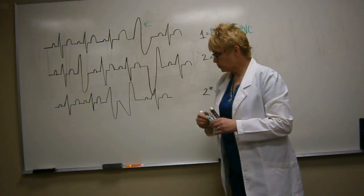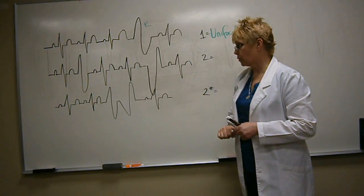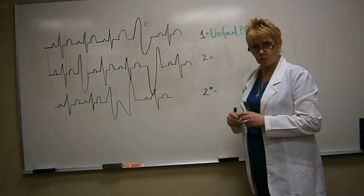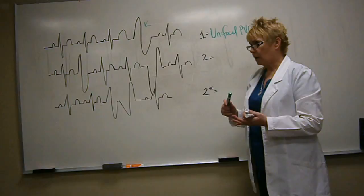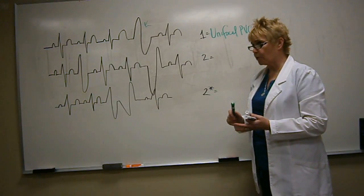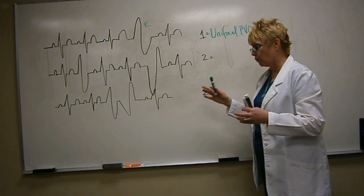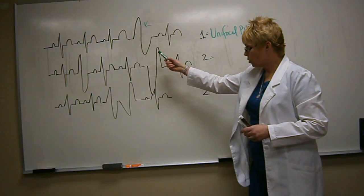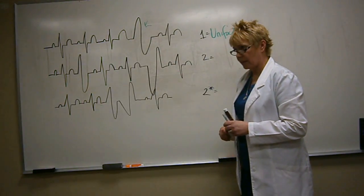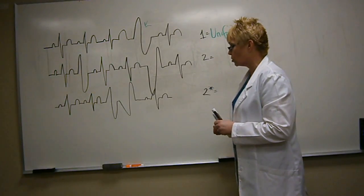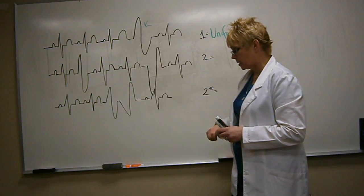On this one, again, I know I covered in the lecture, but remember, PVCs are caused by some type of ectopy in the ventricle: hypoxia, hypercarbia, hyperkalemia, hypokalemia. There are a variety of causes. This waveform means there is one particular section of the heart that is irritated, so it fires off an earlier ectopic beat.